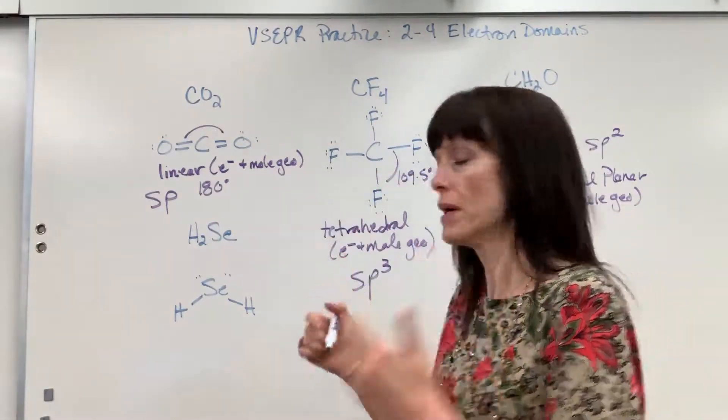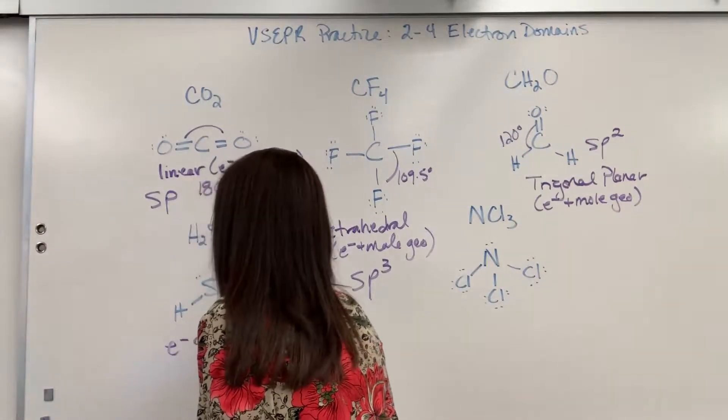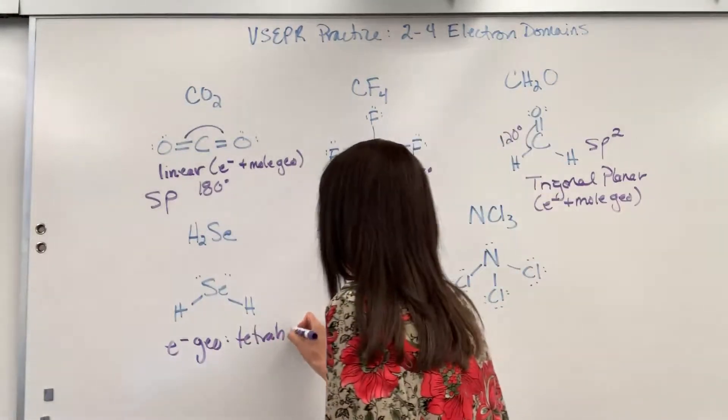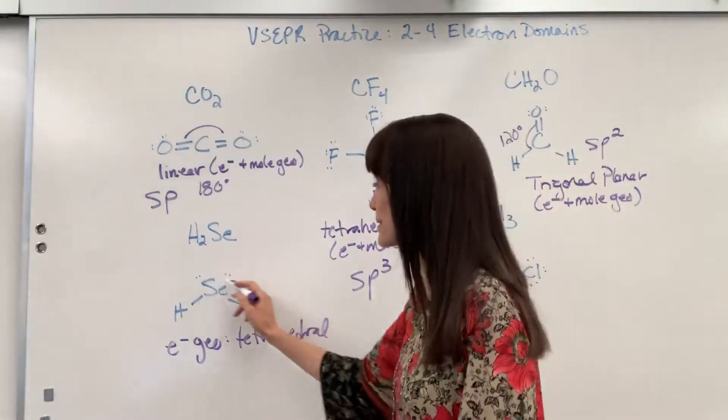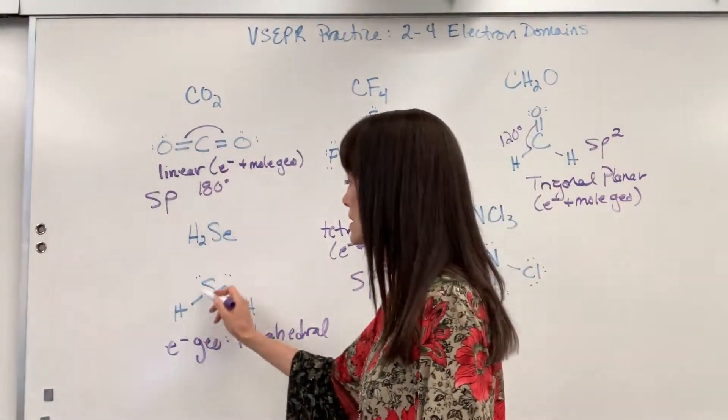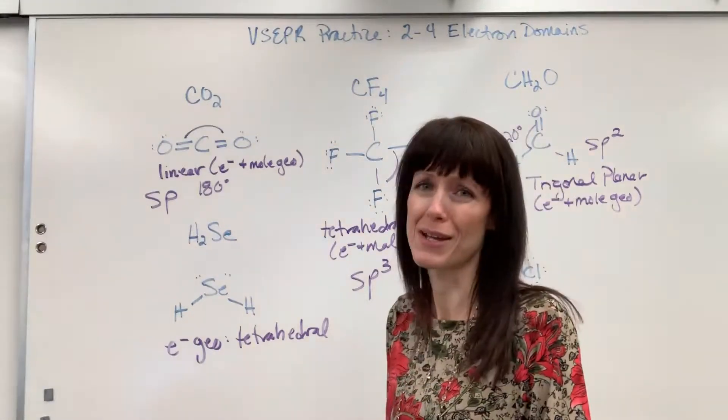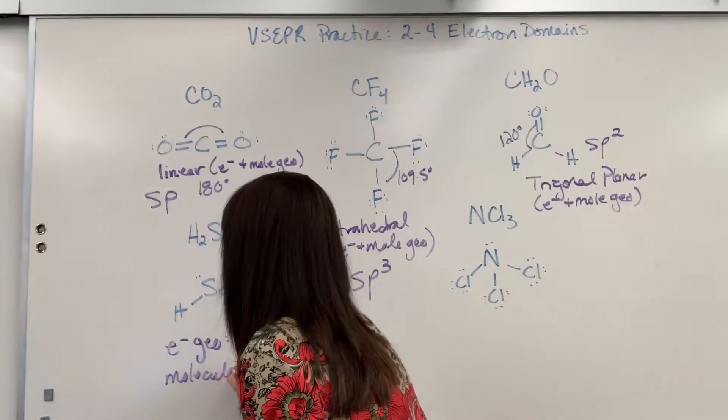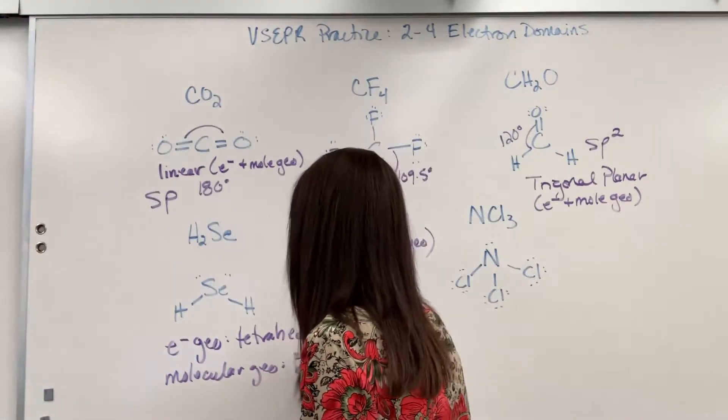So four electron domains, that shape is going to be tetrahedral. So the electron geometry, tetrahedral. Four electron domains, it forces that tetrahedral shape. But what you would see, if we could actually look at this, we can't see those lone pairs. All you see is this part right down there. And you'll recall kind of a sad anticlimactic name. The molecular geometry is bent.